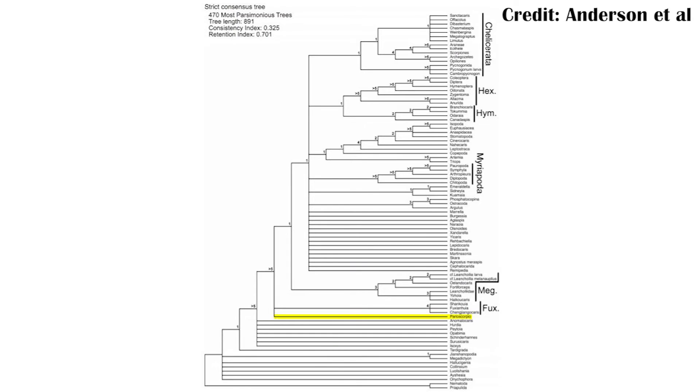What they found is that it still doesn't group with the fuxianhuiids — it's very, very close, but it doesn't branch off the same branch as them. Instead, it's kind of indeterminate where exactly it is. So this means we probably need more fossils of Parioscorpio or another closely related animal to get a better idea of where exactly it came from. As for the interpretation of the arms, the authors prefer the first interpretation, which would make them more distinct than the other groups. However, they do leave the caveat that they haven't found a lot of fossils from this formation, so more could still be found.